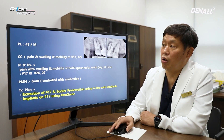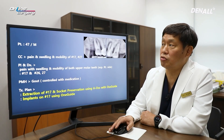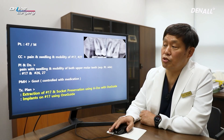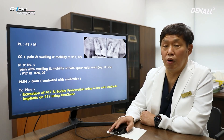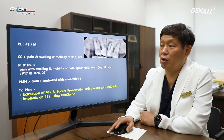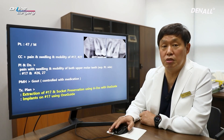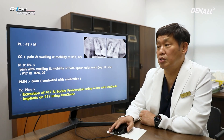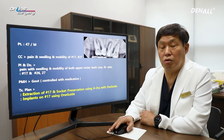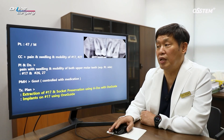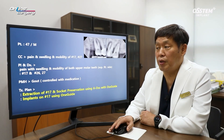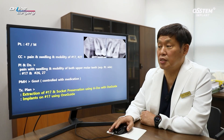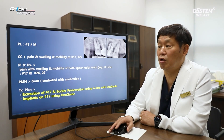The patient complained of swelling and discomfort. The patient felt that the right side, number 17, was worse and wanted that treated first. Regarding medical history, the patient had gout, but it was under control with medication, and this was not going to be a direct problem for implant surgery.